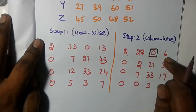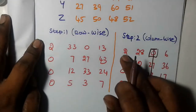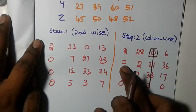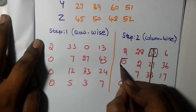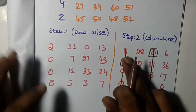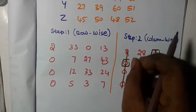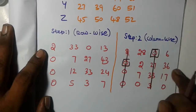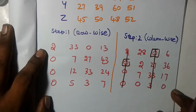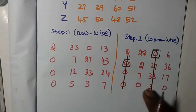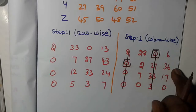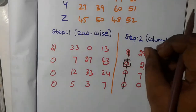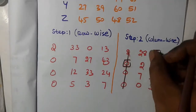Continue checking each row. If a row has two zeros, come back to it after handling rows with a single zero. Cut the row and cut the column after each assignment. Repeat for the second row, third row, and fourth row until all assignments are made.